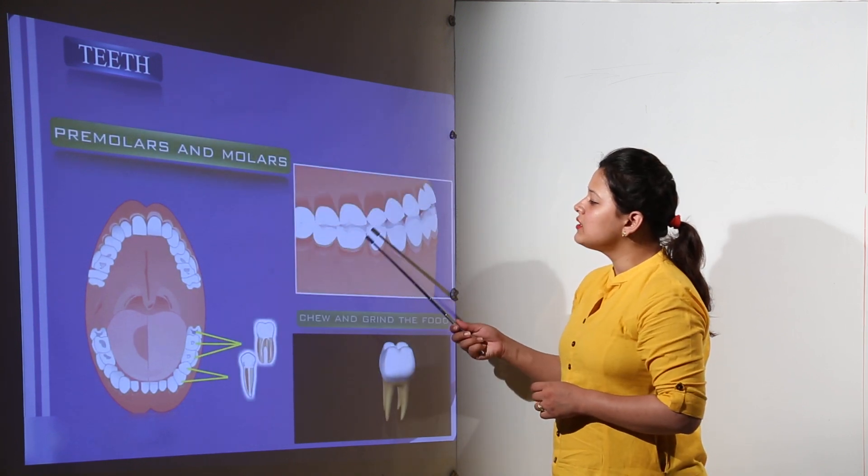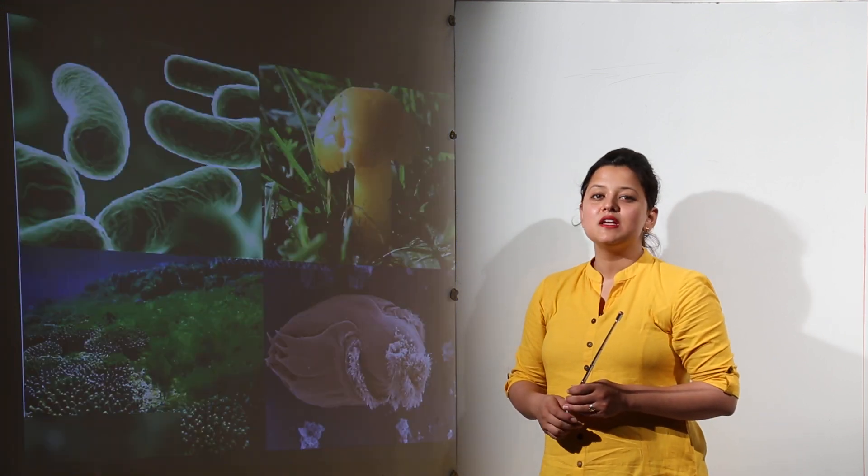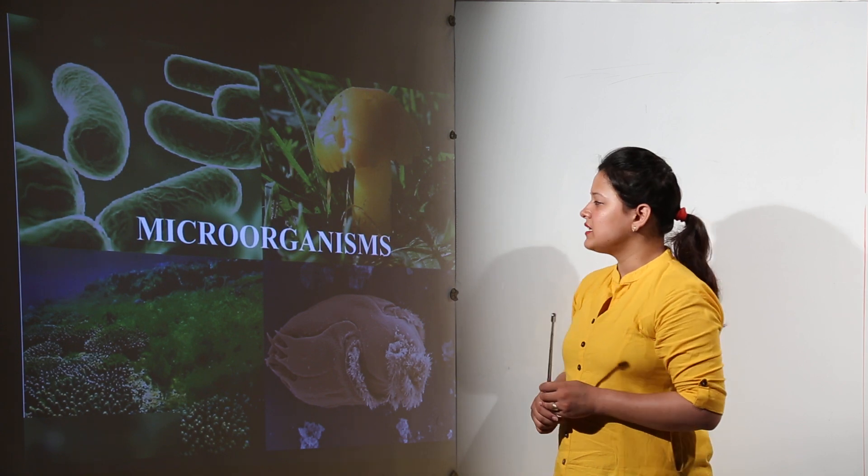Then we have premolars and molars that chew and grind the food completely so that it could be digested with our digestive system.